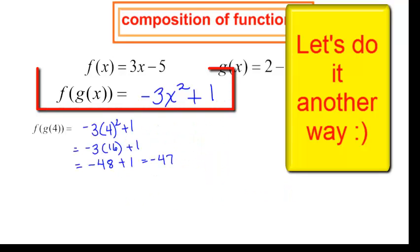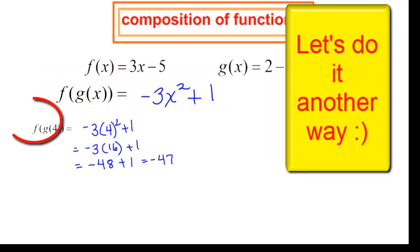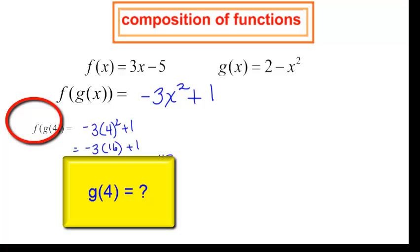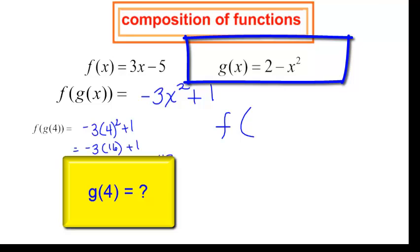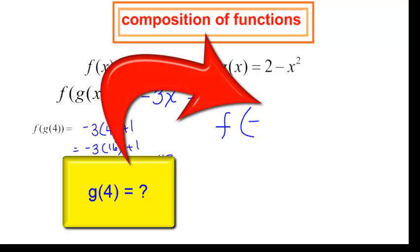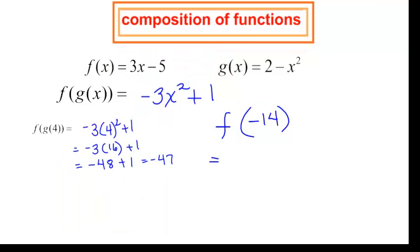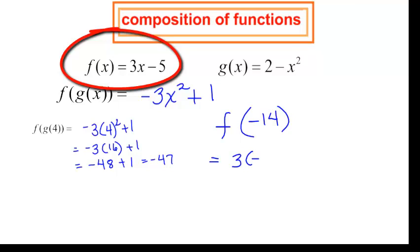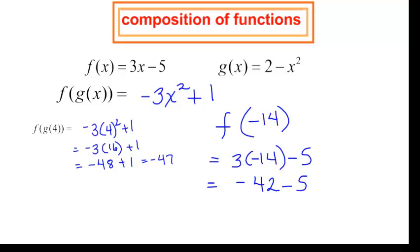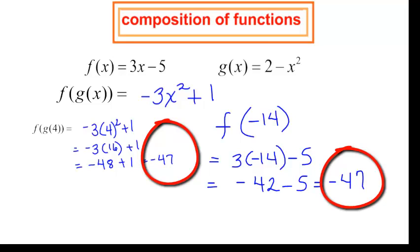Now let's say I had not found this function first, and did it the step-by-step way. Finding f at g of 4: look at g and plug in 4, giving 2 minus 4 squared, which is 2 minus 16, equal to negative 14. Then take the f function — 3 times whatever is in the parentheses minus 5 — so I have 3 times negative 14 minus 5. That is negative 42 minus 5, which is negative 47. And that is not magic — that is mathematics.